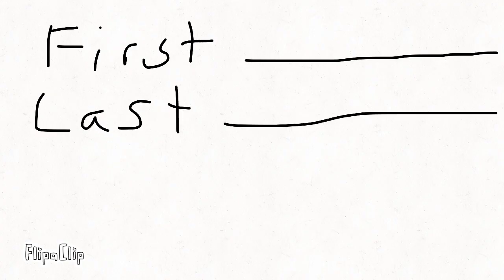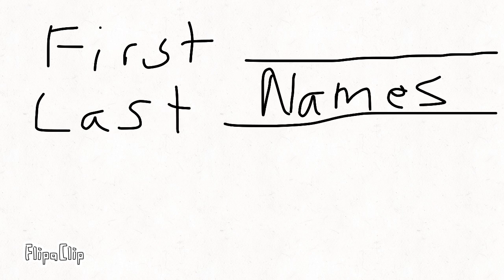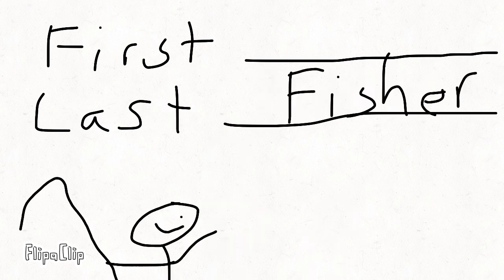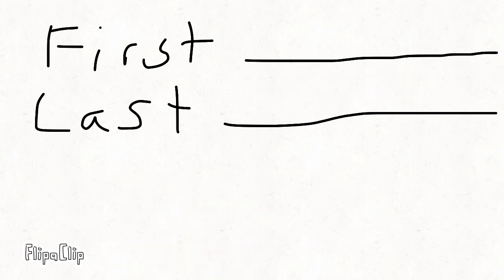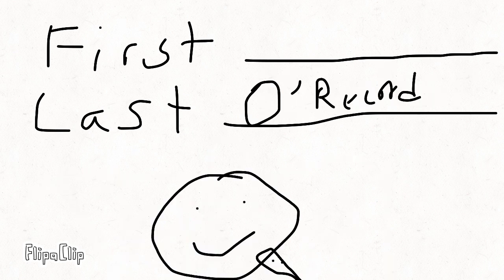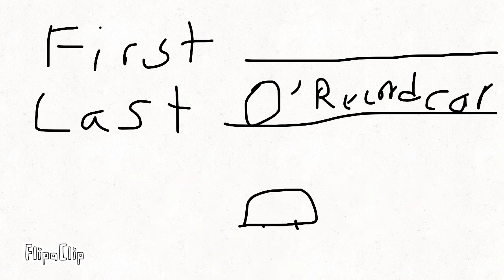I find it interesting how some last names are derived from what people did. For example, the last name Cook or Fisher. So would mine be recording himself, car, making a horrible animation out of it?